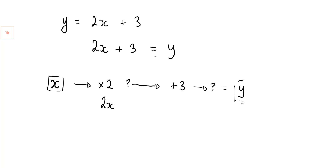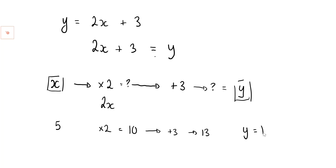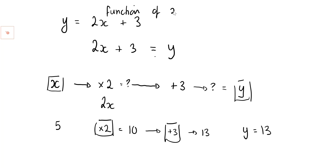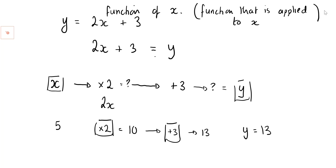For instance, if I pick x equals 5: 5 times 2 equals 10, then 10 add 3 equals 13, so y is 13. This is called a function machine — these are the mathematical operations done in the function. It's called a function of x: the function applied to x is multiply by 2, then add 3.